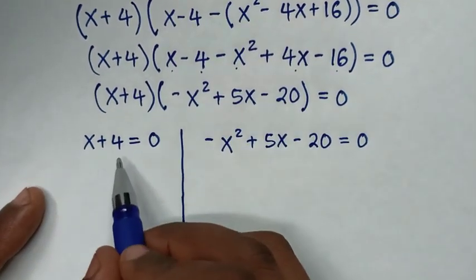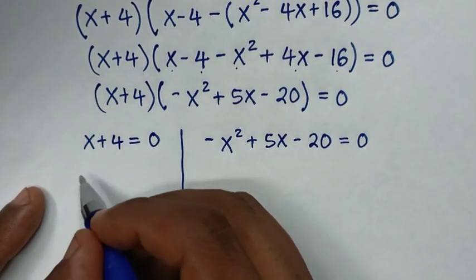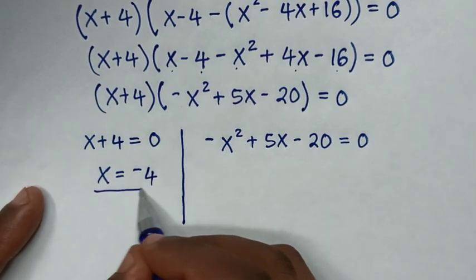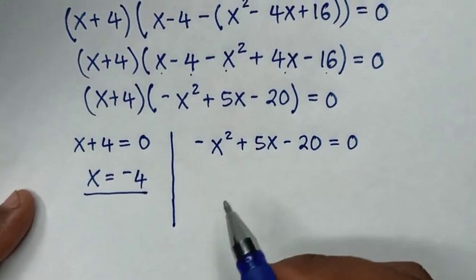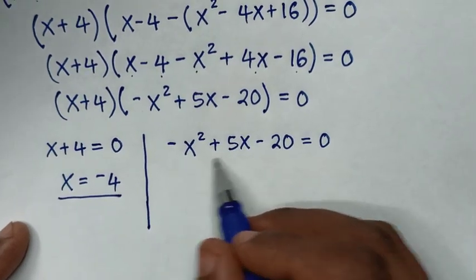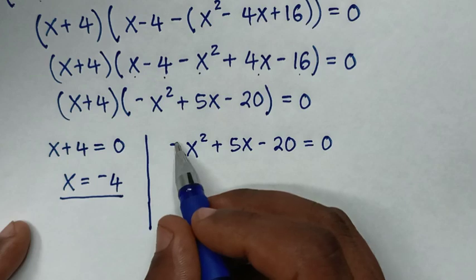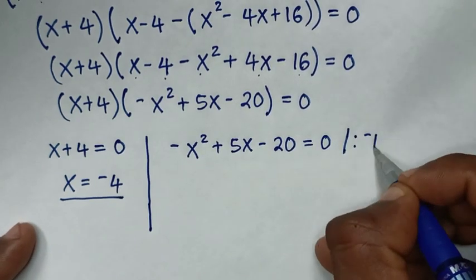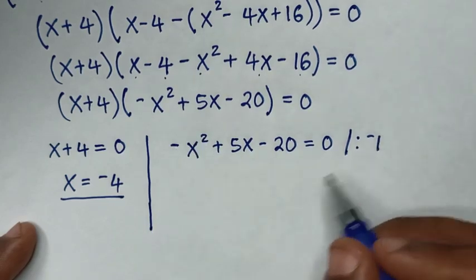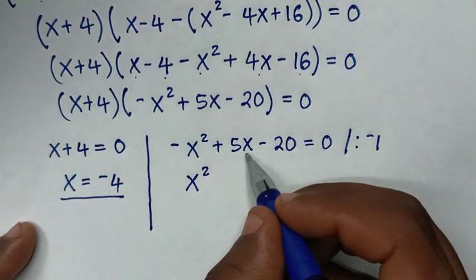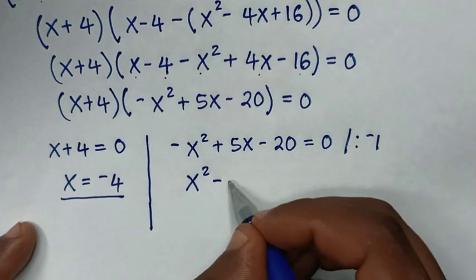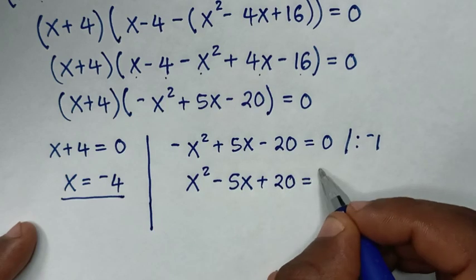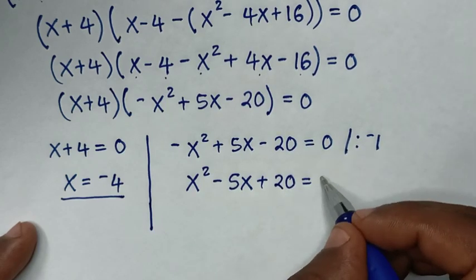From here we take 4 to the right side, so x equals negative 4. This is the first value of x, which is the real solution. To solve the quadratic equation, we divide the whole equation by negative 1 to remove the negative from x squared. So negative x squared divided by negative 1 is positive x squared, positive 5x divided by negative 1 is negative 5x, and negative 20 divided by negative 1 is positive 20, equal to 0.